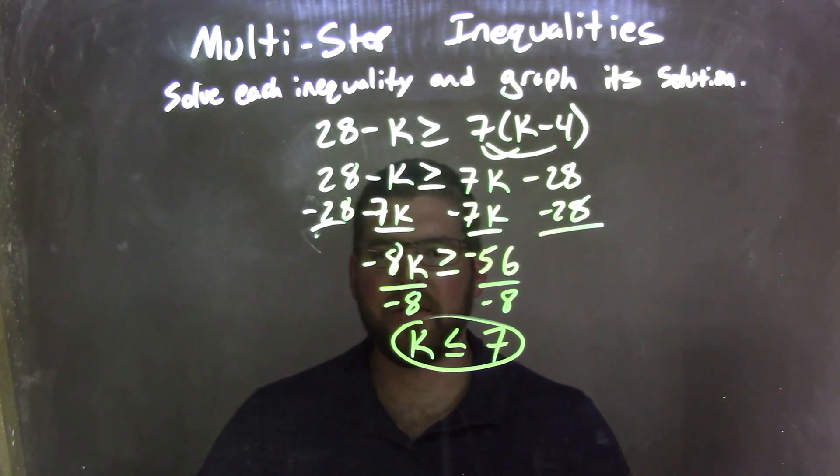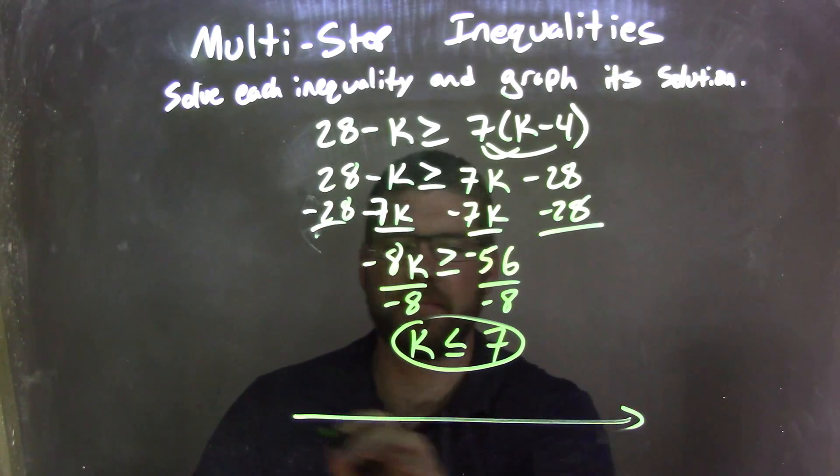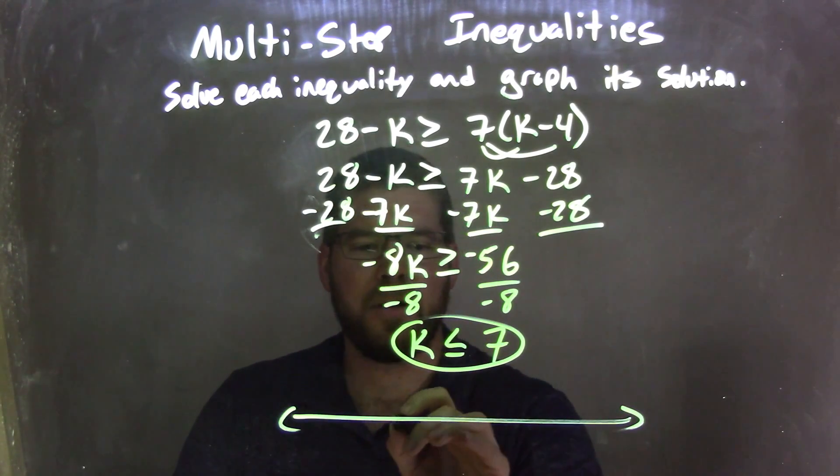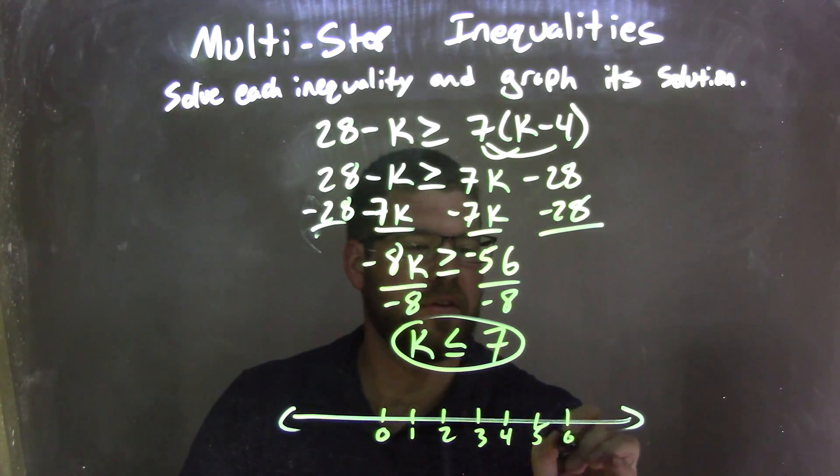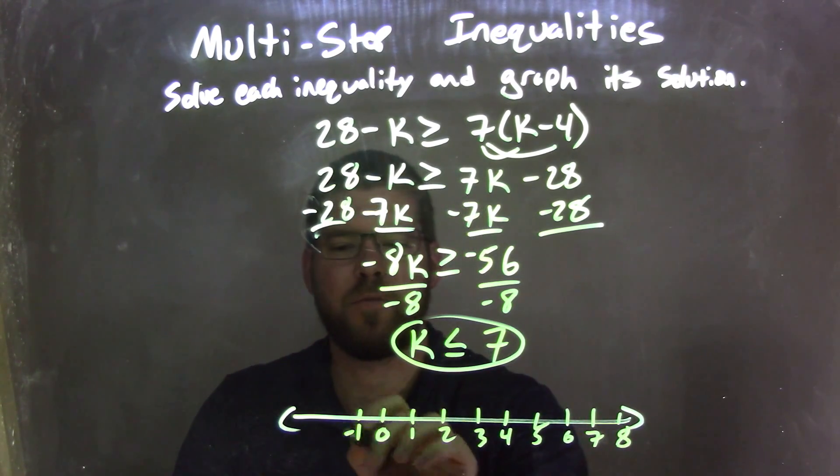Now we have k isolated, which is great, so now we need to graph it. Let's look at our number line here. Let's go 0, 1, 2, 3, 4, 5, 6, 7, 8, and then negative 1, negative 2, negative 3.